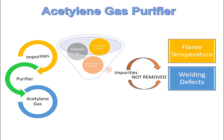An acetylene purifier is a cylindrical device which is used to purify the generated acetylene gas. Acetylene gas, when free from impurities, can then be used for gas welding.